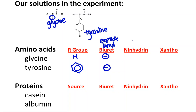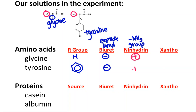And ninhydrin — what does it test positive for? It tests for a free amino group. And every amino acid has one of those, so amino acids test positive.